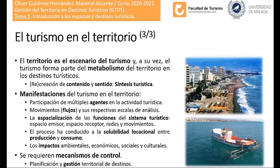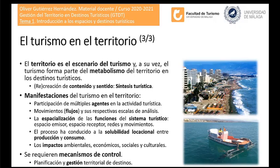También se proyectan movimientos o flujos bajo distintas escalas de análisis, que se pueden analizar con un sistema de información geográfica, permitiendo analizar explícitamente la espacialización de las funciones del sistema turístico. Es propio del turismo la convergencia entre espacio de producción y espacio de consumo, algo que no ocurre con otras actividades pero sí con el turismo, el ocio y la recreación. Todo ello se proyecta en el territorio en forma de impactos ambientales, económicos, sociales y culturales.